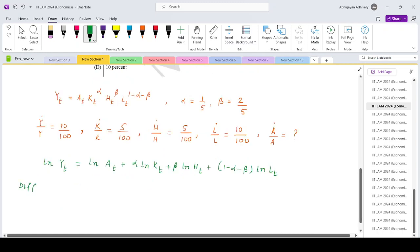And then we will differentiate with respect to time, so that will be y dot by y on the left, first term a dot by a, plus alpha times k dot by k, plus beta times h dot by h, plus 1 minus alpha minus beta times l dot by l.